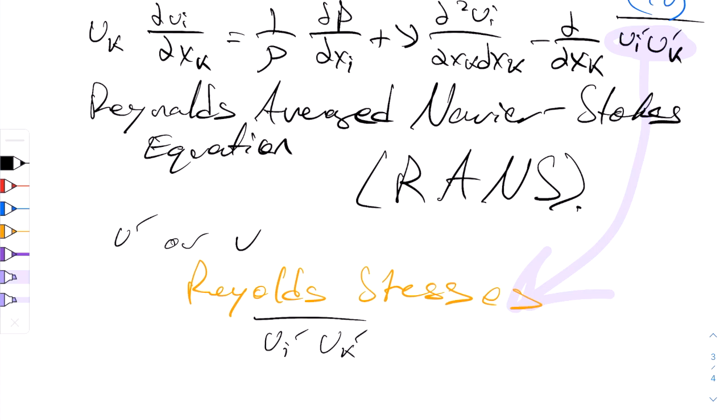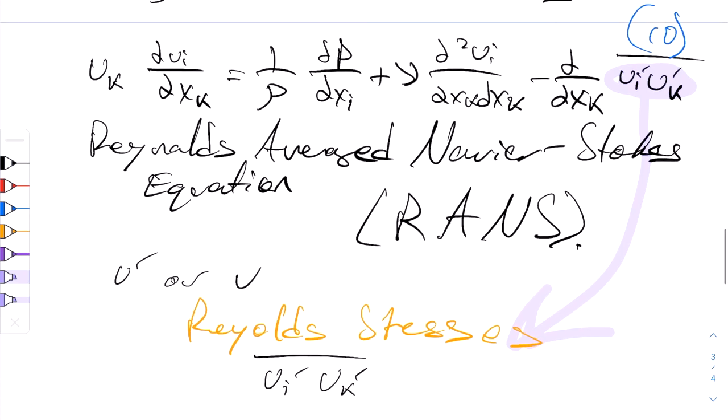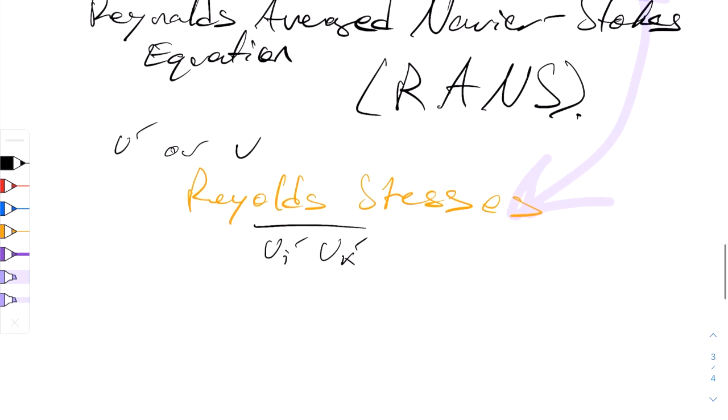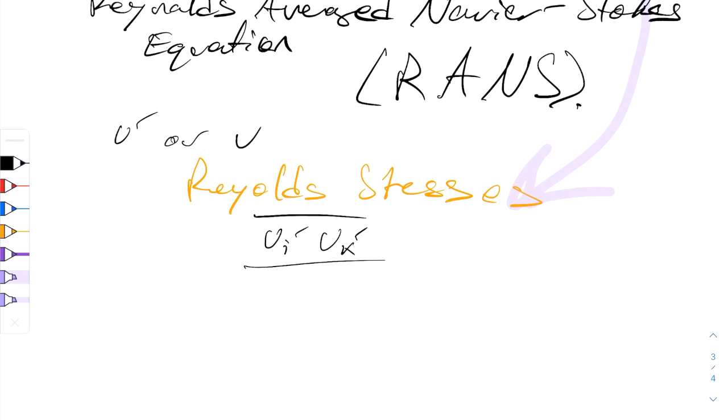And of course, we can change i from 1 to 3 and k to 1 to 3, and we get a stress tensor, as you well know. So this is actually one of the most important equations in this series of lectures, right here, number 10. So make a note of that because it's so important. And we might not know exactly what the Reynolds stresses are, and we might need to model them. But we'll come up with a number of models in the near future.